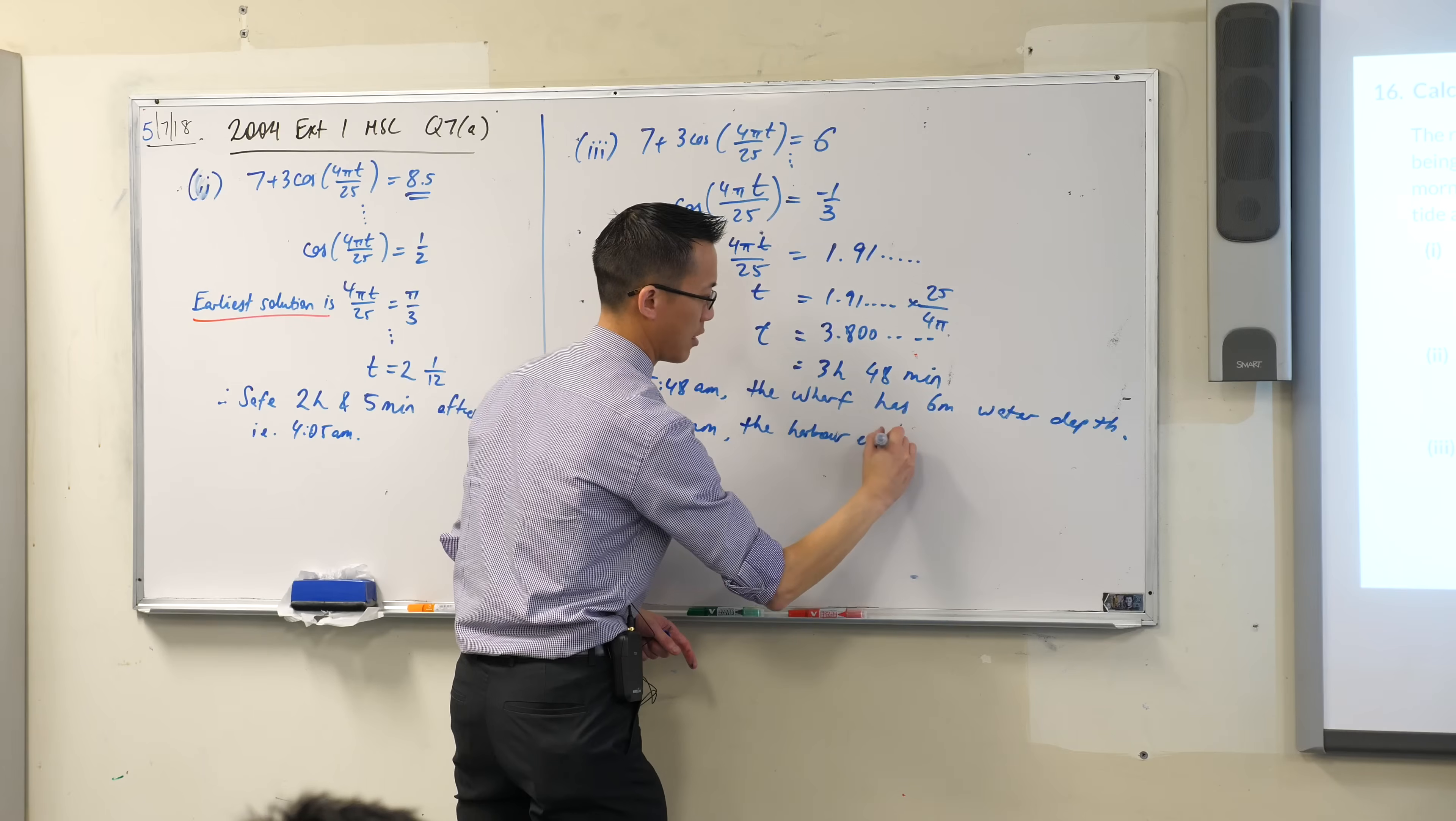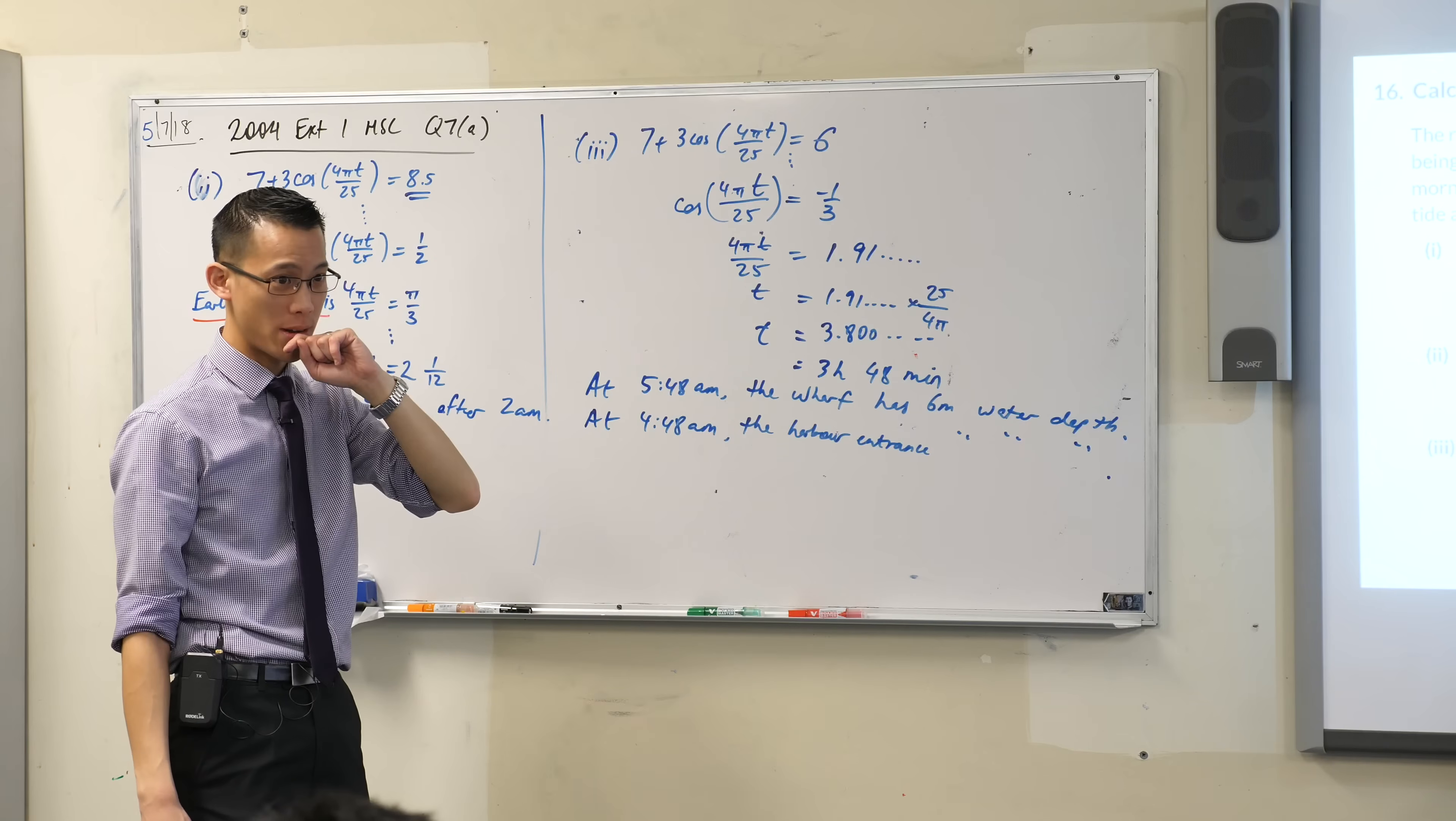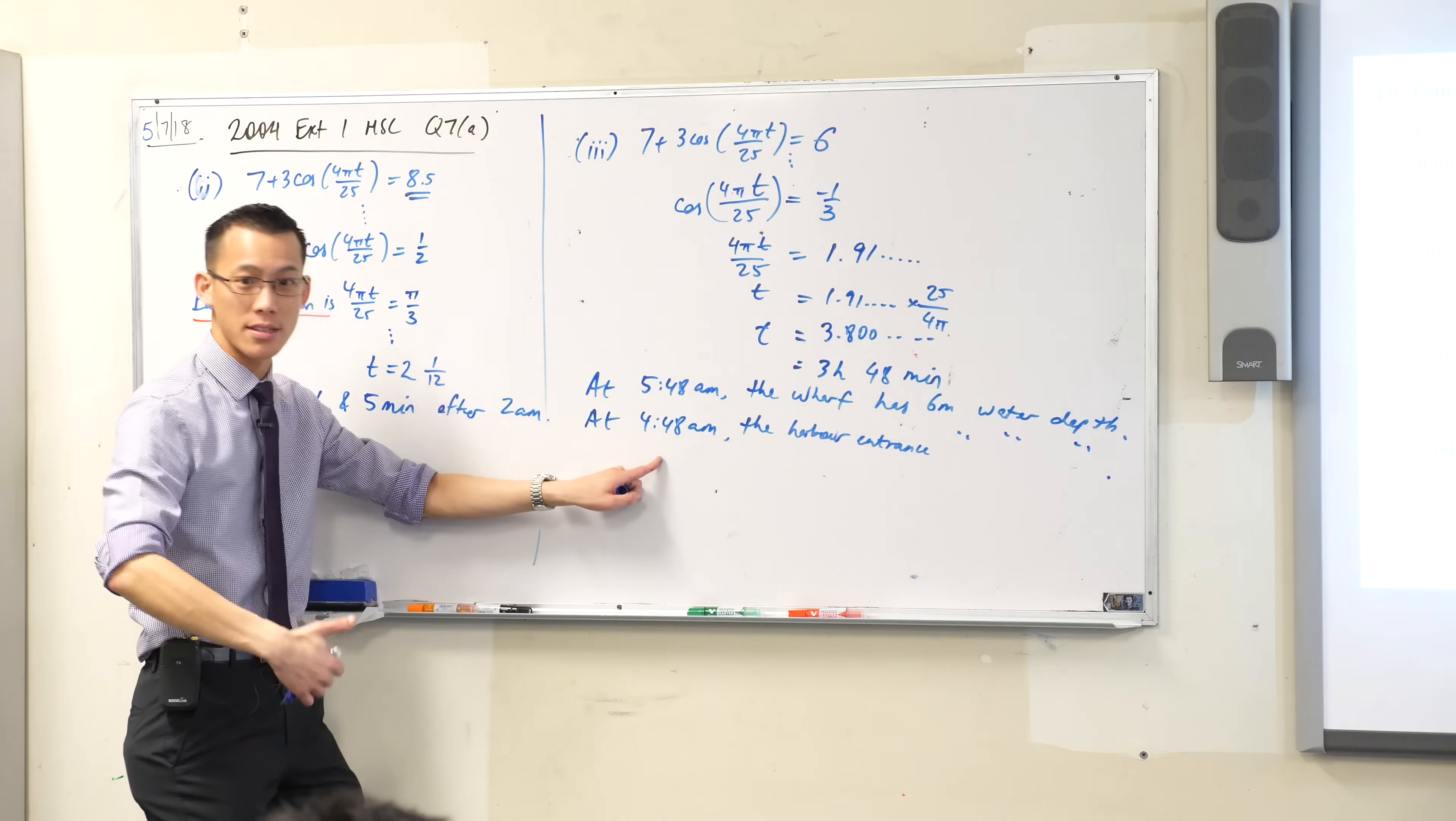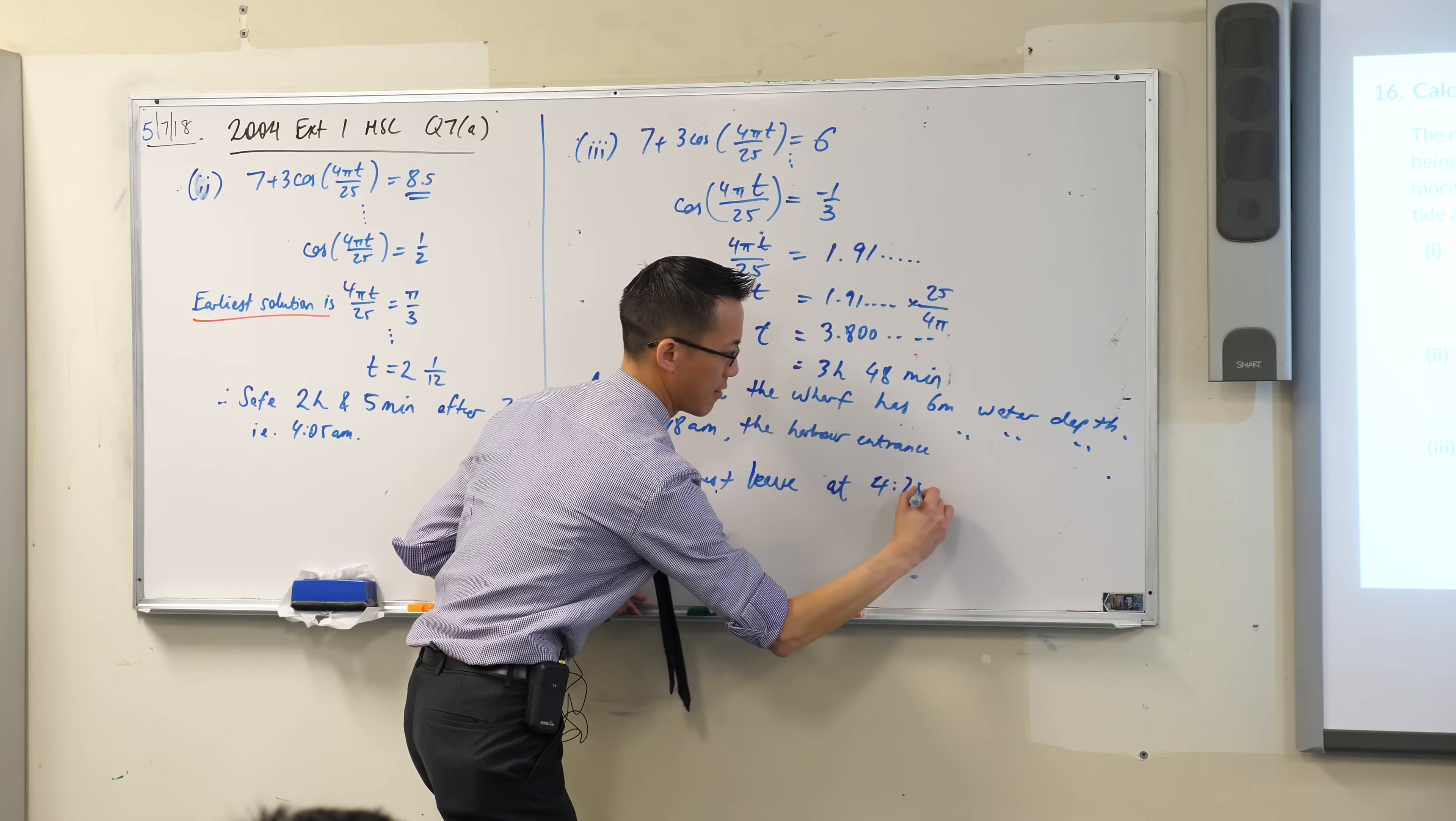So now I know when it happens there, but it takes me some time to get to the harbour entrance. I leave and I can't leave at this time. By the time I get there, it's over. How long does it take me to get there? Read the question. Last sentence, second last before the actual question. The ship takes 20 minutes to get there. If I want to reach the harbour entrance at that time, because that's the last moment it's safe, I have to leave 20 minutes earlier than that. So I can say, therefore, ship must leave. What's 20 minutes earlier than that? 4:28 AM.